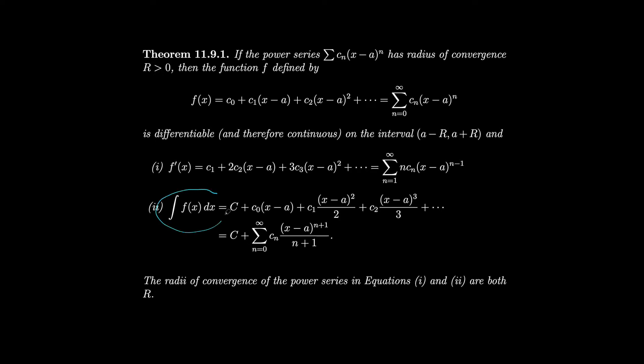Similarly, you can integrate a function defined as a power series by integrating each of the terms: the constant term gets an (x minus a) factor, all other terms go up a power and divide by the new power, and you add a plus C. So (x minus a) to the n becomes (x minus a) to the n plus one divided by n plus one. Importantly, differentiating or integrating does not change the radius of convergence — only the interval of convergence can change at the endpoints.